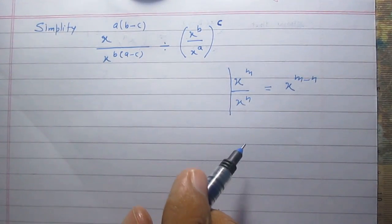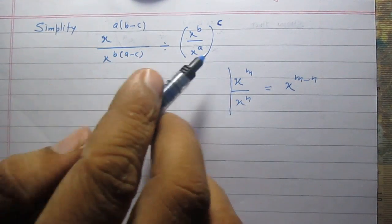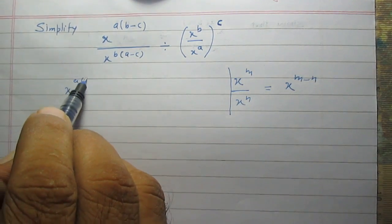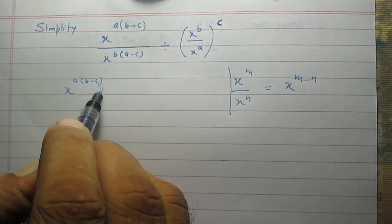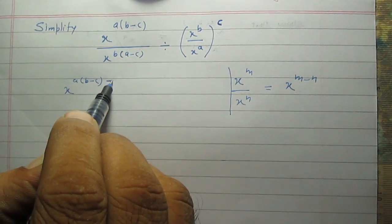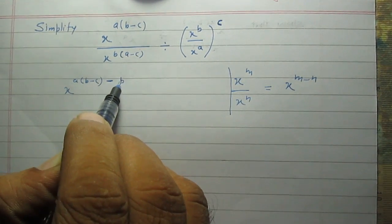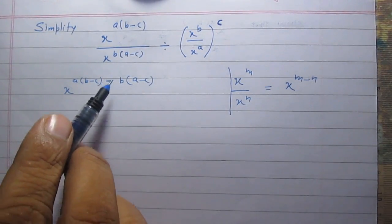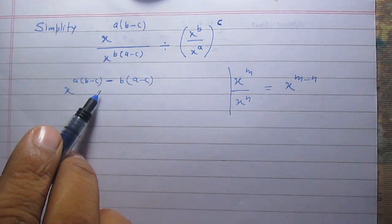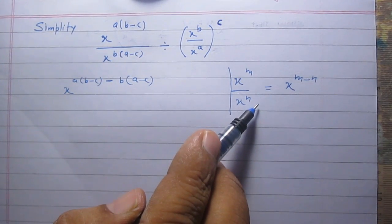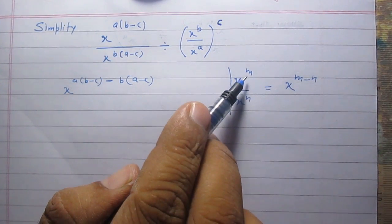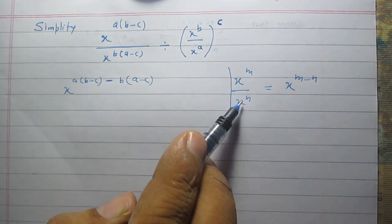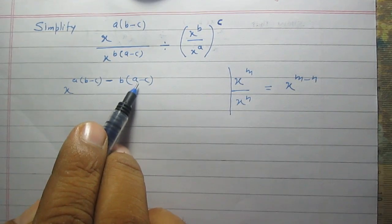So, using this law, we can write the first part of this quantity as x raised to the power a multiplied by b minus c, then it is subtracted by b multiplied by a minus c. It is the first part of the given quantity because of this rule, where m is a multiplied by b minus c and n is b multiplied by a minus c.